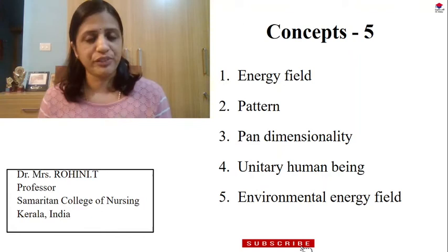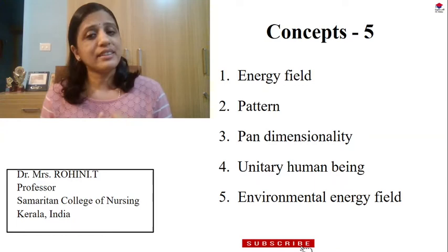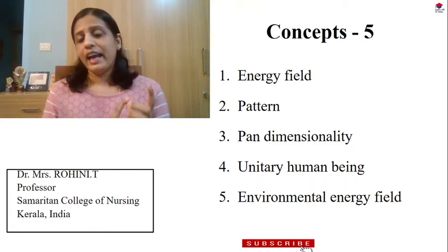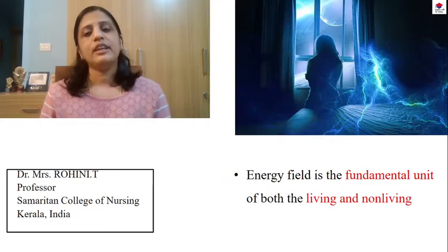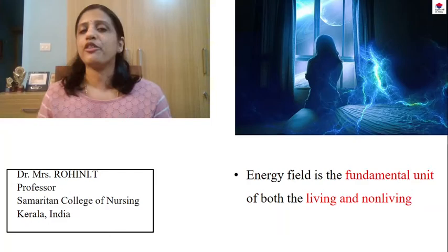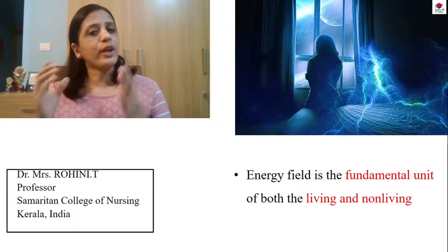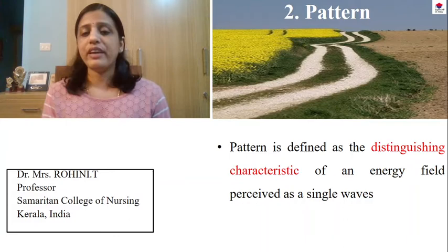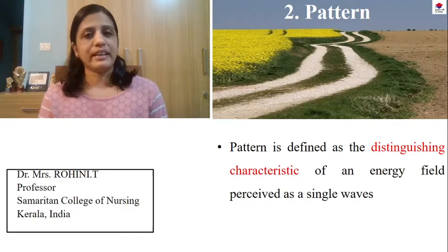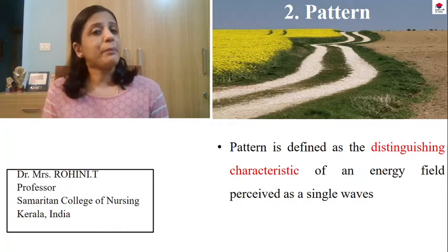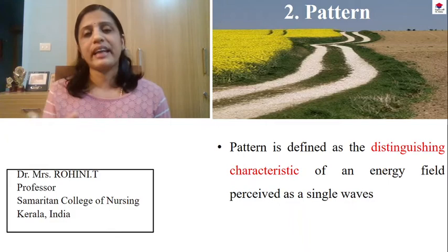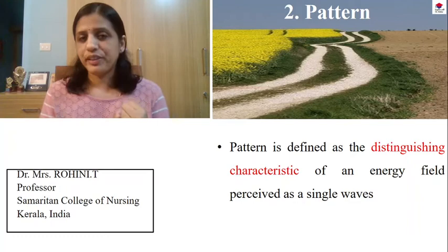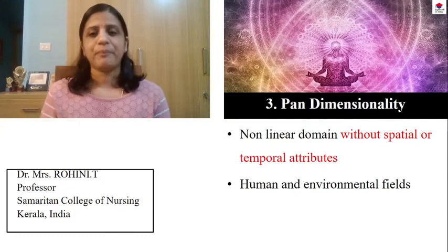Rogers' theory is talking about energy field. The first concept is energy field — it is a fundamental unit of both living and non-living things. According to Rogers, even a living or non-living thing has an energy field. Number 2, this energy field has a pattern, which means each human being has their own distinguishing characteristic of their energy field. For example, some people are very kind, some very loving, some very short-tempered. When you describe that distinguishing characteristic of an energy field with one word, that is called a pattern.